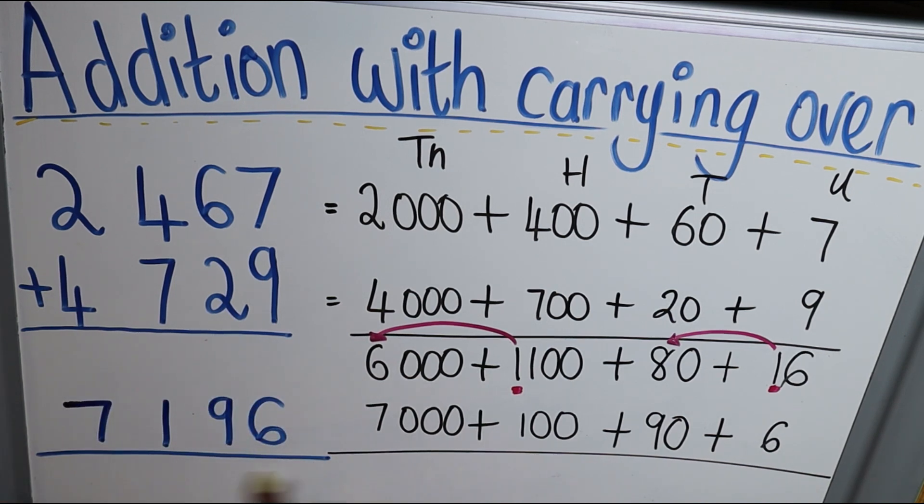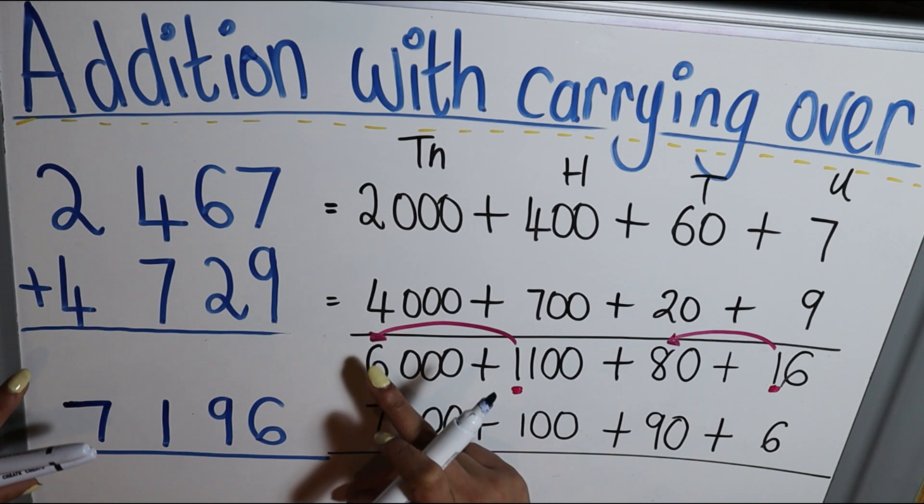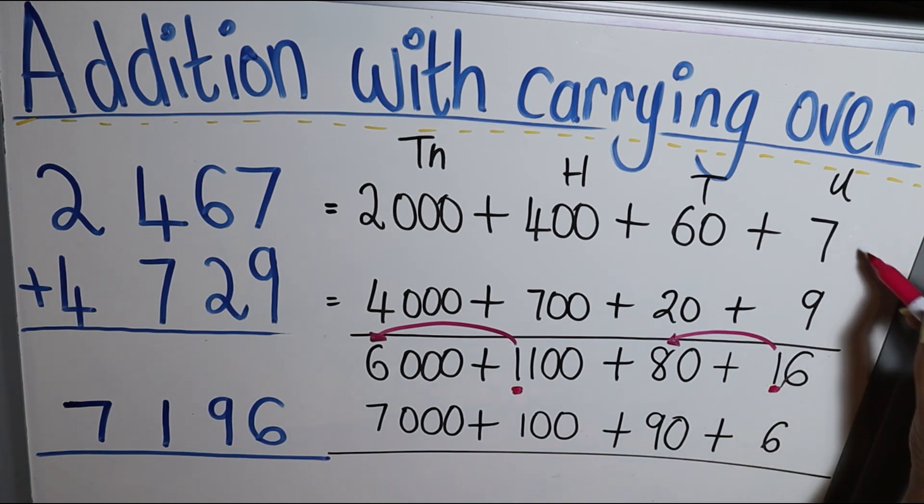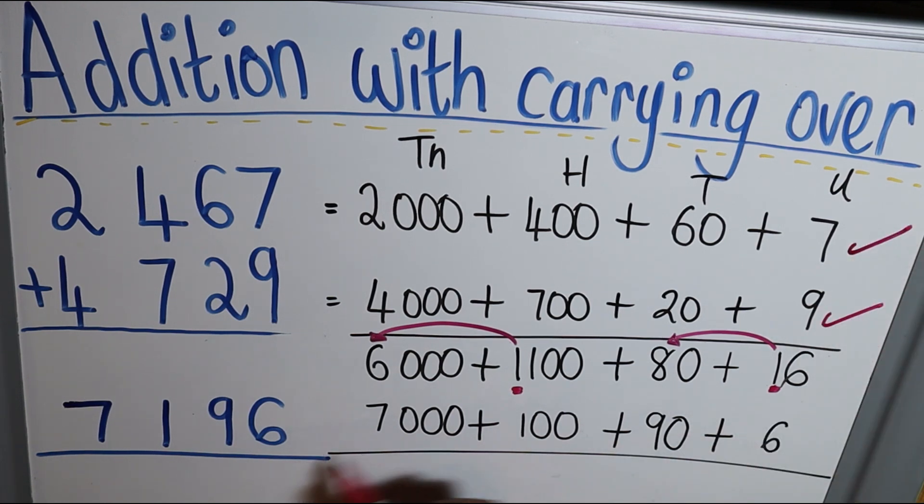You draw a line to indicate that that is your answer and that you're done with your sum. If your teacher should mark this, it should be four marks, so you do get your mark for expanding your numbers.